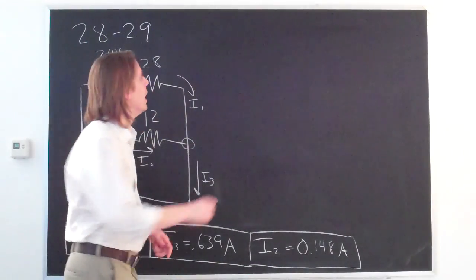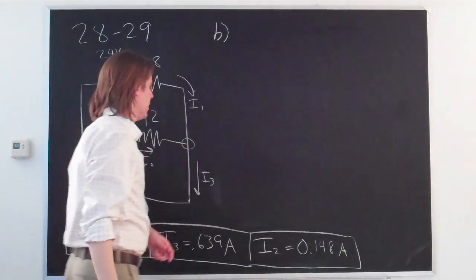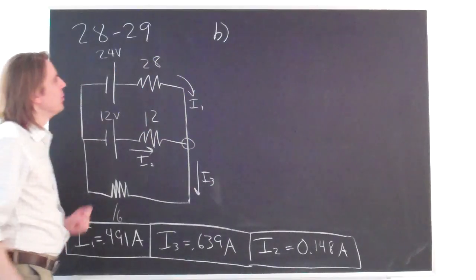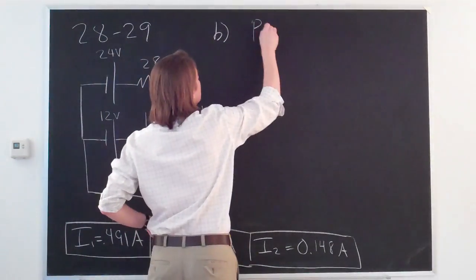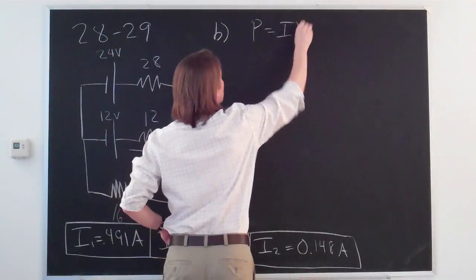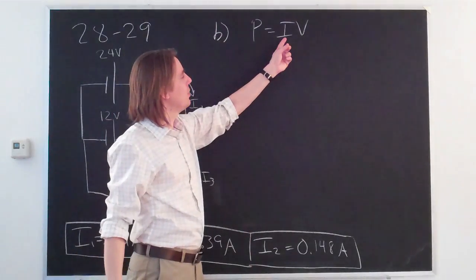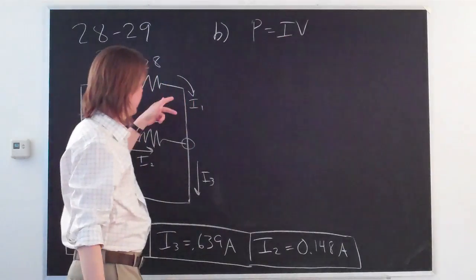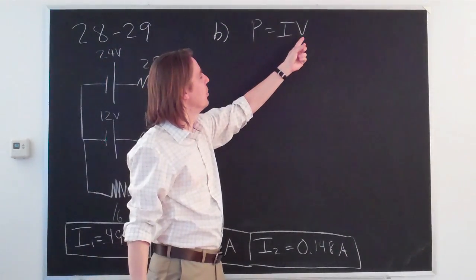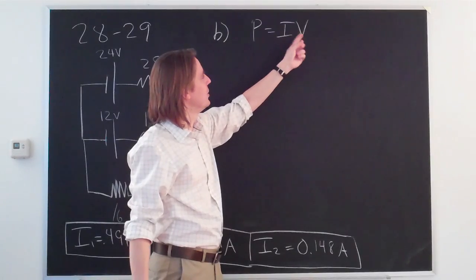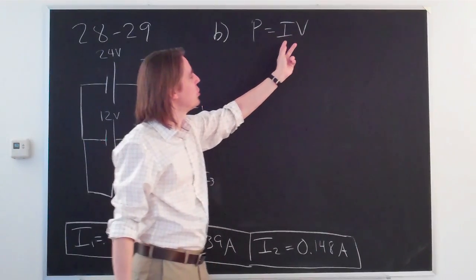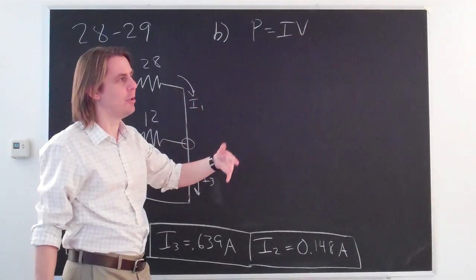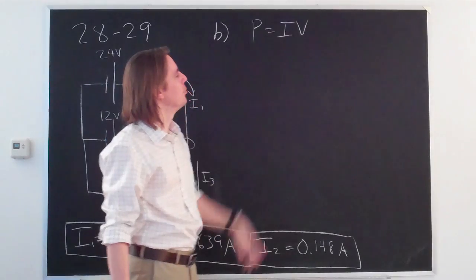In part B, 2829 asks for how much power is dissipated in each resistor. So you need to remember that the power dissipated in a resistor is its current times the voltage. We could calculate the energy loss by each charge carrier. As it loses energy in the resistor, that would be the charge times the voltage difference. But if you wanted charges per unit time, if you wanted power, the energy loss per unit time, that would be the charges per unit time. So that's why it's current, charges per unit time.